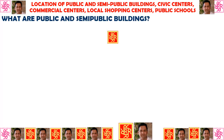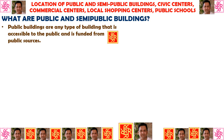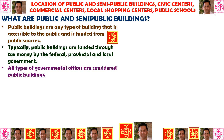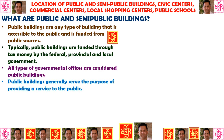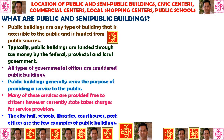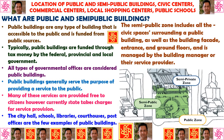Public buildings are any type of building that is accessible to the public and is funded from public sources. Typically they are funded through tax money by the federal, provincial, and local government. All types of governmental offices are considered public buildings. Public buildings generally serve the purpose of providing a service to the public — many of these services are provided free to citizens, however currently the state takes charges for service provision. City halls, schools, libraries, courthouses, and post offices are a few examples.